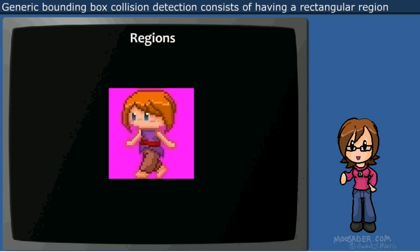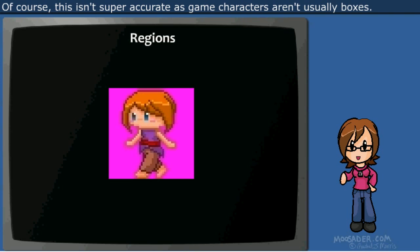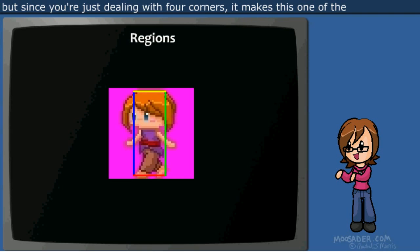Generic bounding box collision detection consists of having a rectangular region around your objects that specify where they are solid. Of course, this isn't super accurate, as game characters aren't usually boxes themselves, but since you're just dealing with four corners, it makes this one of the easiest ways to check for collision detection.